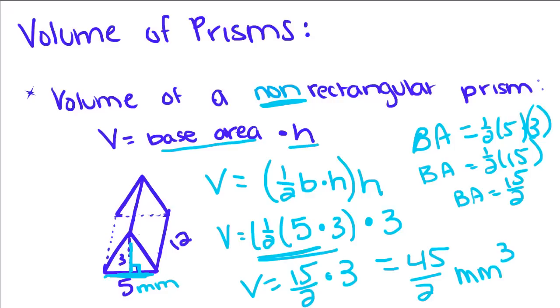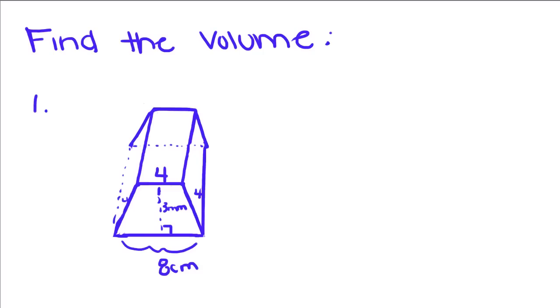So now we're going to do an example. Find the volume. So this is a trapezoidal prism because its bases are a trapezoid. So first, for the volume, it's base area times height. So let's find our base area.